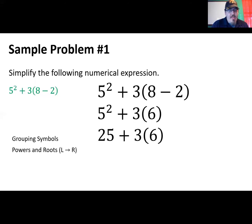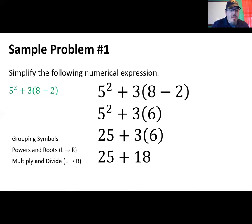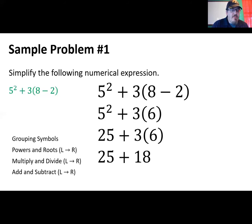Now we go to multiplication and division. There's multiplication in this problem: three times six is 18. We are going left to right, but there's just the one operation. Last step is addition and subtraction — there's only an addition step here, so we do that next, going left to right. We end up with an answer of 43. That is our final solution.